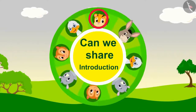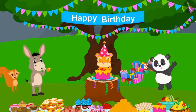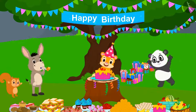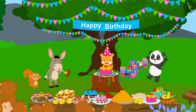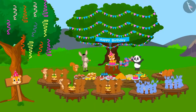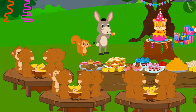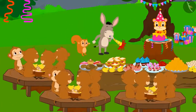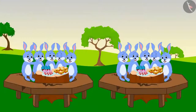Division Equal Grouping. Today, it is the king of the forest, Shere Khan's birthday. All the animals of the forest have been invited for the birthday celebrations. Different animals are sitting in groups. Let us see how the rabbits are sitting.